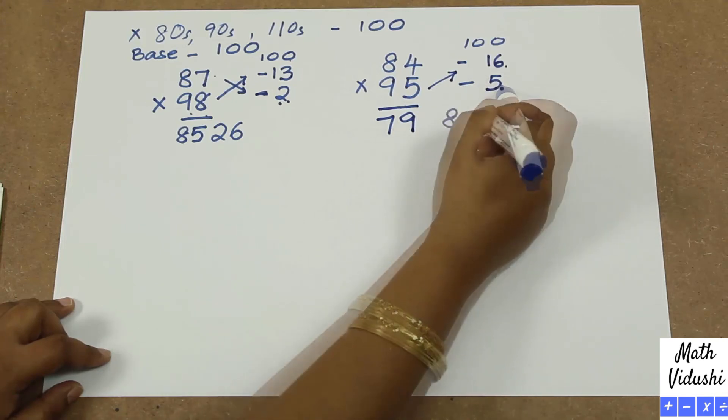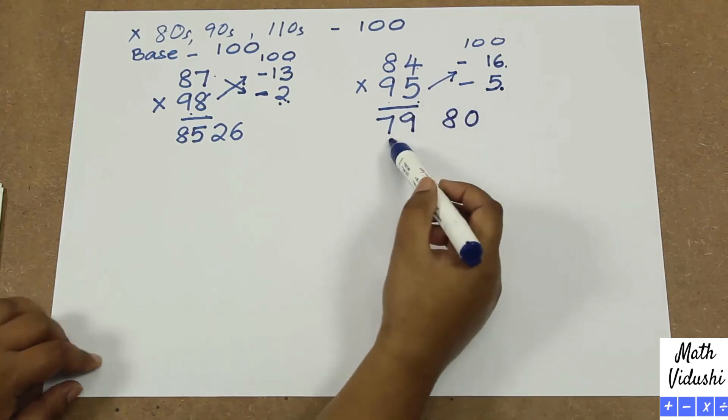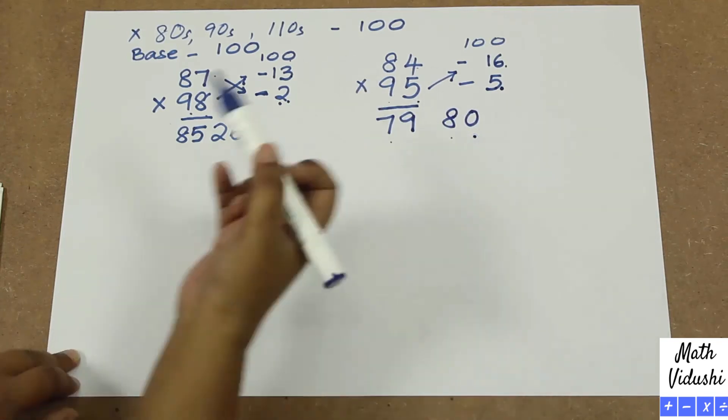And 16 multiplied by 5. So 84 multiplied by 95 is 7980.